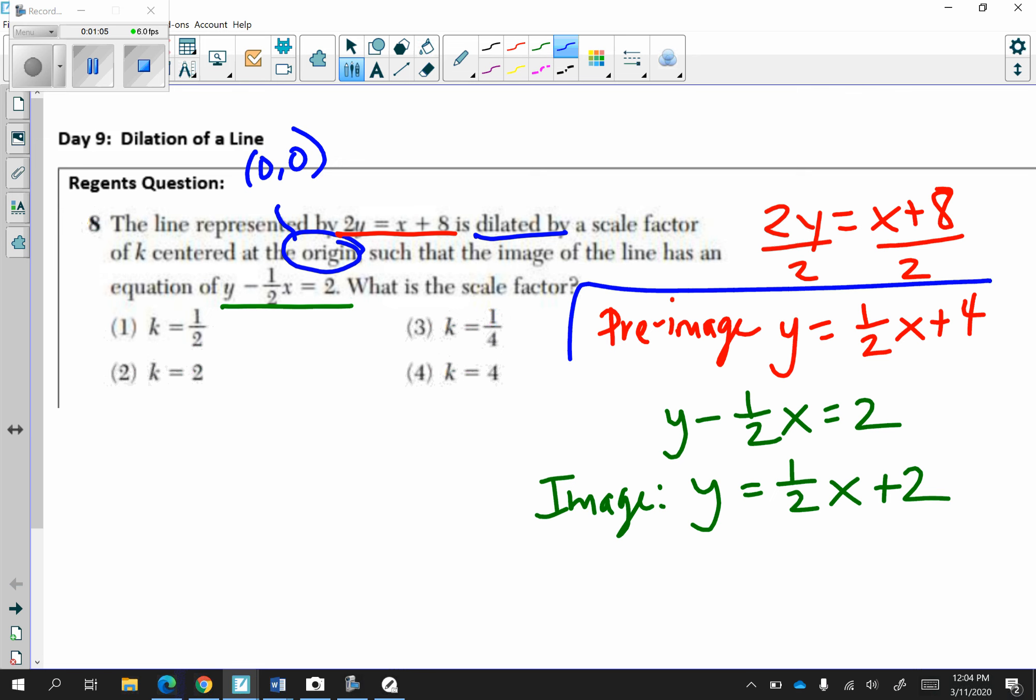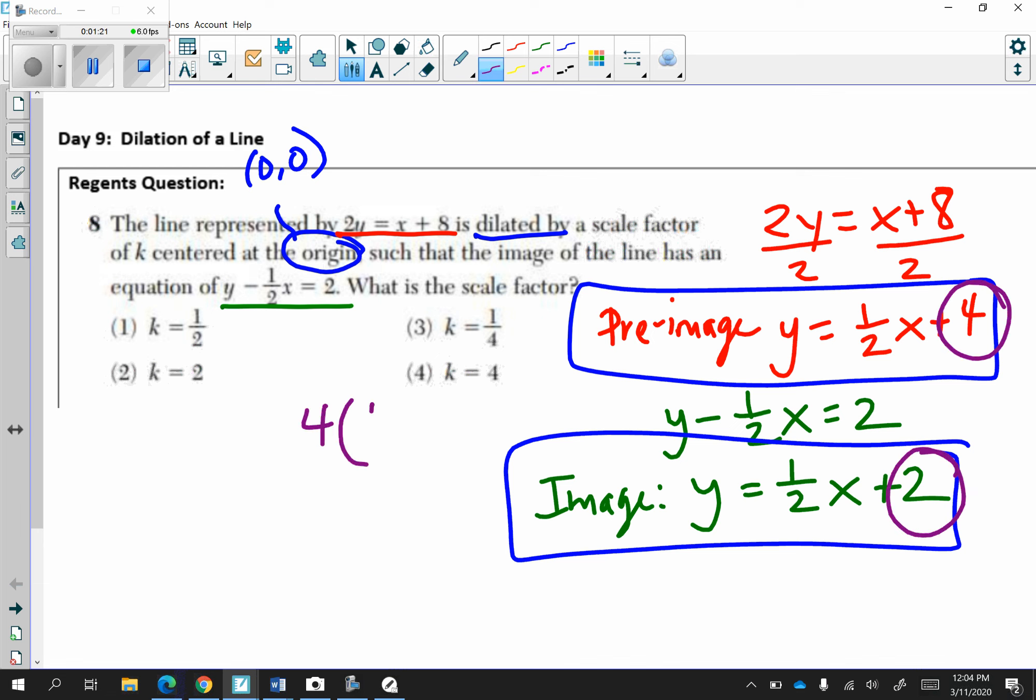Let's compare the pre-image to the image. Notice the slopes are the same, one-half. However, the b value, which is the y-intercept, has changed. How do we get from 4 to 2? Well, we multiply 4 by one-half to equal 2.